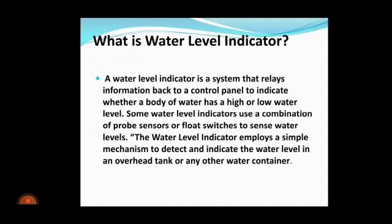What is Water Level Indicator? A Water Level Indicator is a system that relays information back to a control panel to indicate whether a body of water has a high or low water level. Some Water Level Indicators use a combination of probe sensors or float switches to sense water levels. The Water Level Indicator employs a simple mechanism to detect and indicate the water level in an overhead tank or any other water container.